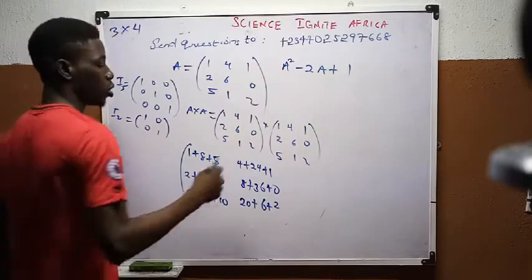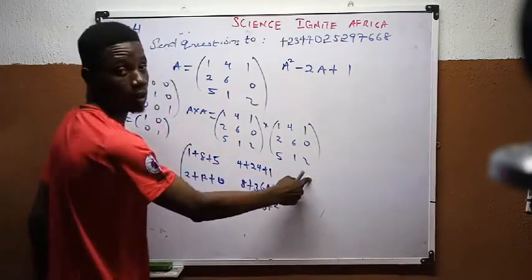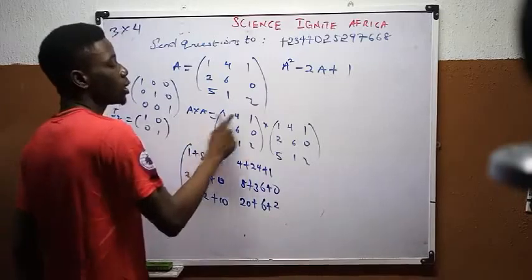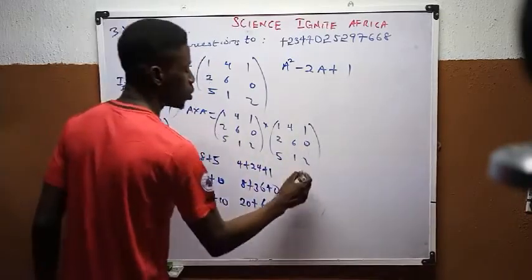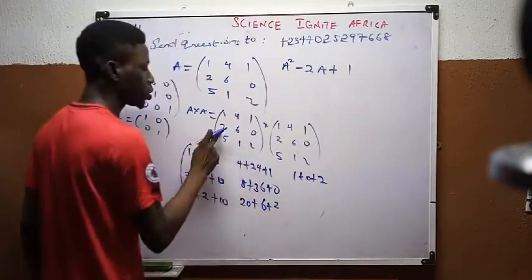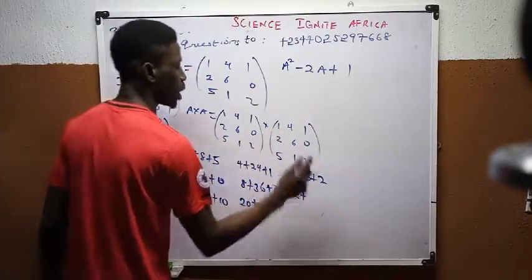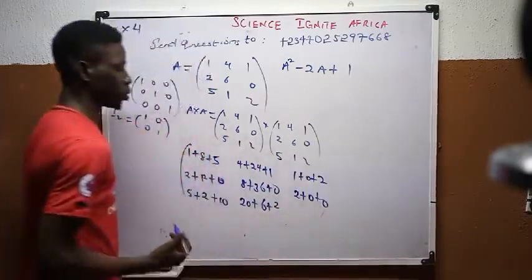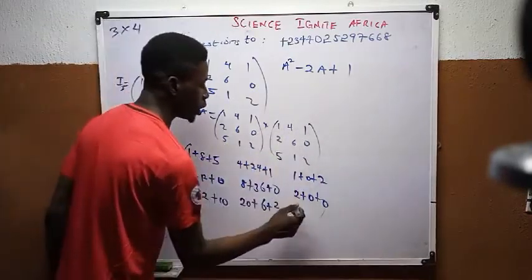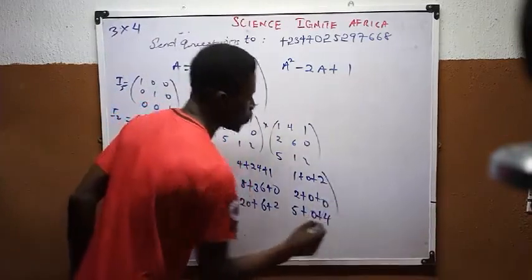Moving to column 3. Row 1, column 3: 1×1 = 1, plus 4×0 = 0, plus 1×2 = 2. Row 2, column 3: 2×1 = 2, plus 6×0 = 0, plus 0×0 = 0. Row 3, column 3: 5×1 = 5, plus 1×0 = 0, plus 2×2 = 4.